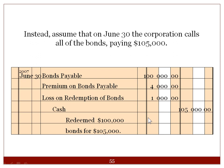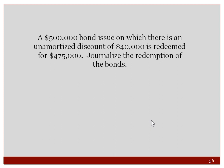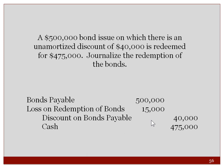Another example: a $500,000 bond issue with $40,000 unamortized discount is redeemed for $475,000. Journal entry: debit Bonds Payable $500,000, credit Discount on Bonds Payable $40,000, credit Cash $475,000, and recognize the loss. You will have a loss or a gain depending on what you call the bonds back for versus what they were on your books for — the same concept as selling fixed assets at above or below net book value.